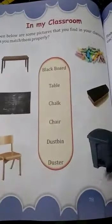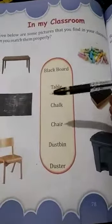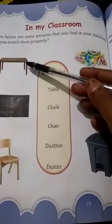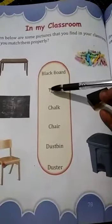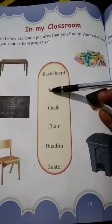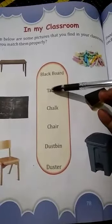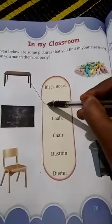You have to see in your classroom children and match their same spelling. This one is a table — T for table. Where is the T children? Here is the T. First letter is T. T-A-B-L-E, table. Here is the table, match it.